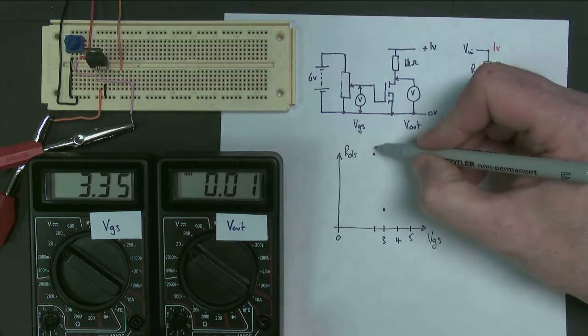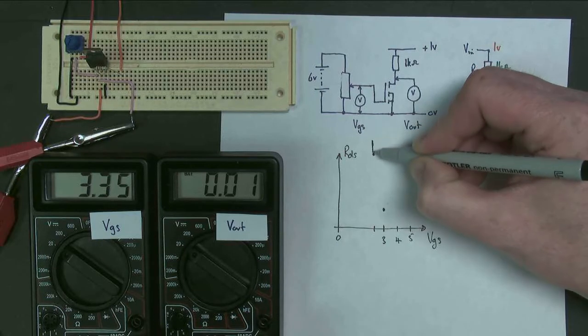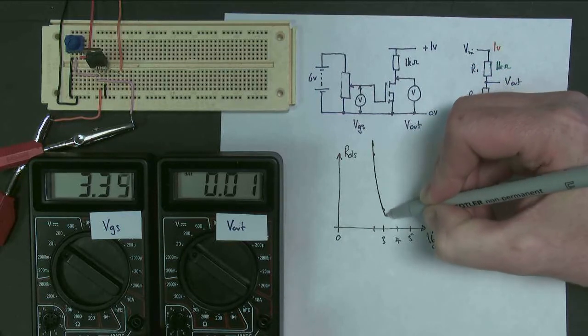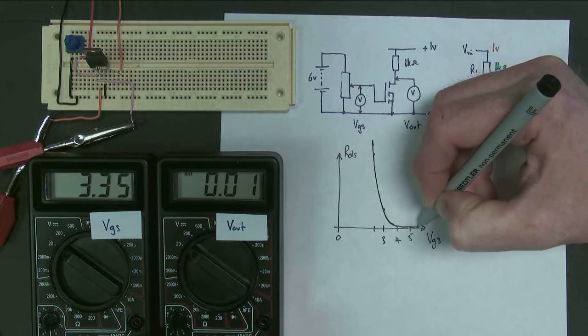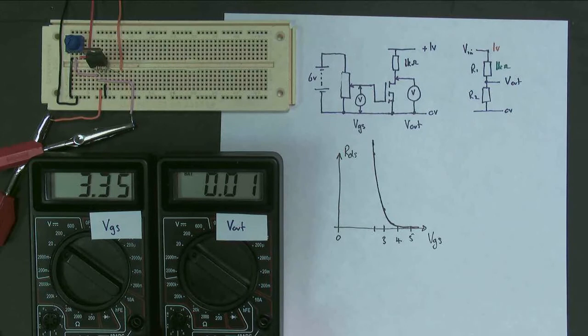So realistically, we get a curve that goes something like this. It's a very steep plummet from a very high resistance down to a very low resistance.